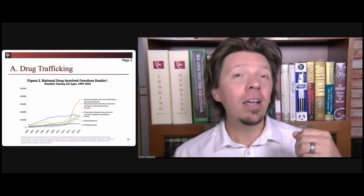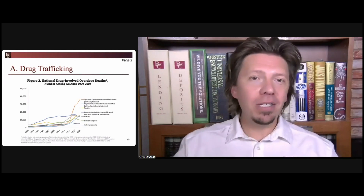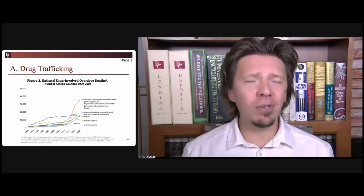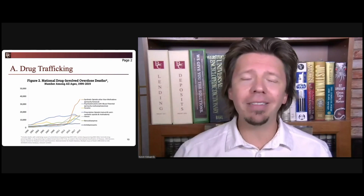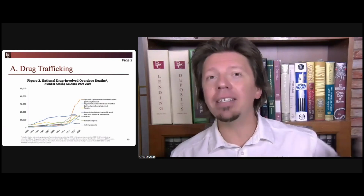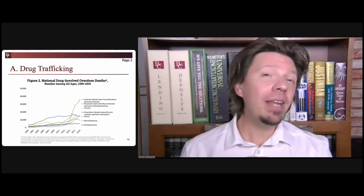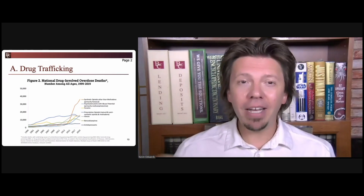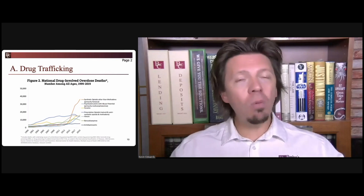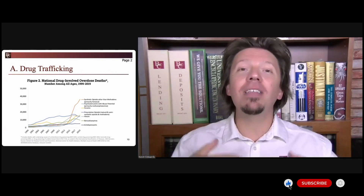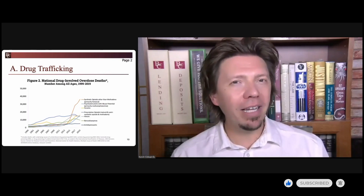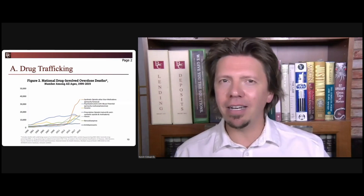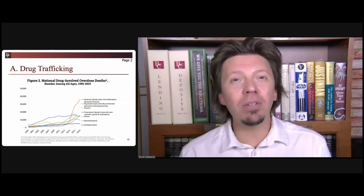To do so, you have to understand the location and practices of various drug organizations. For instance, cocaine is produced in Bolivia, Peru, and Colombia. Heroin is mostly produced in Afghanistan. Fentanyl, however, is coming out of Mexico. MDMA is typically from Europe or Scandinavia. Meth can be homegrown right here in the U.S.